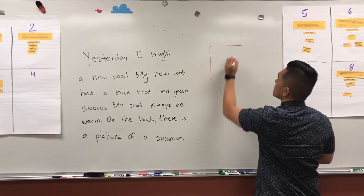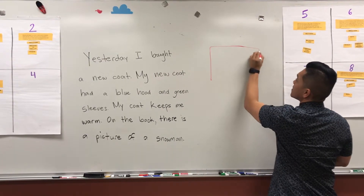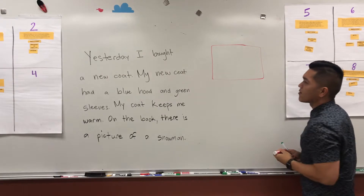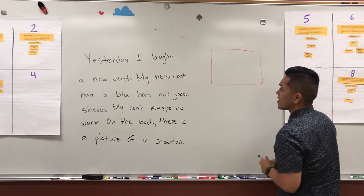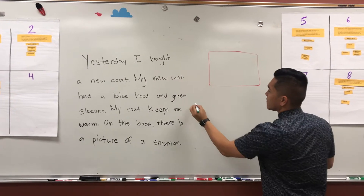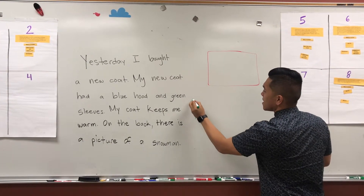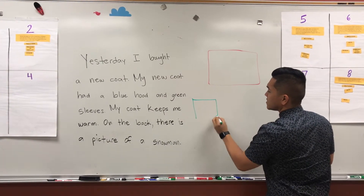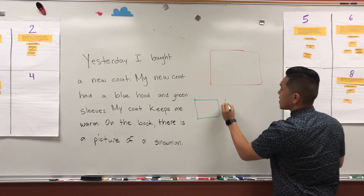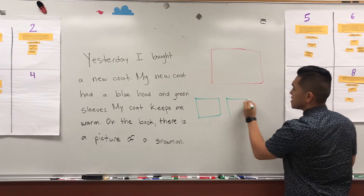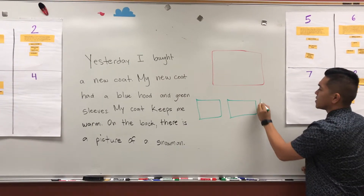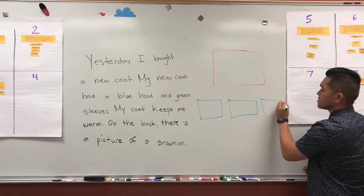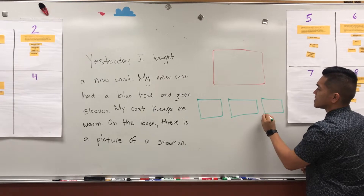So if we were to draw a semantic map, we are going to draw a big square right here which will represent our main idea, and we can have about three smaller boxes where you will put your supporting details.